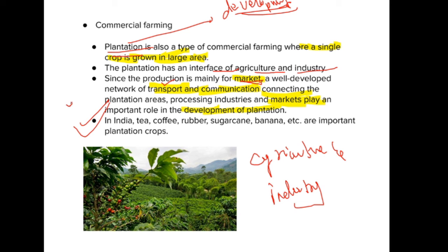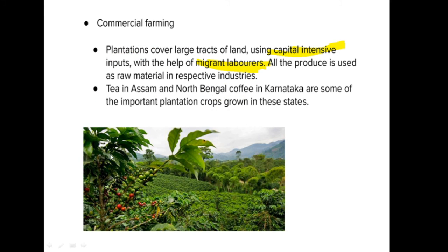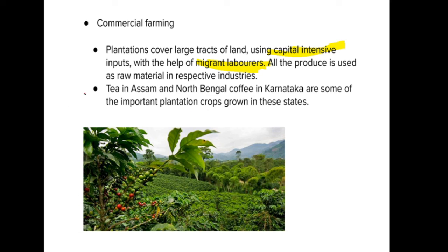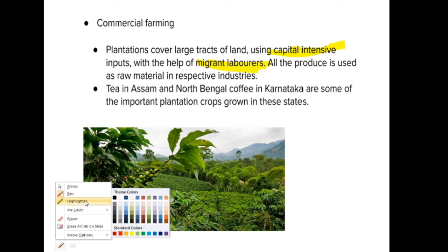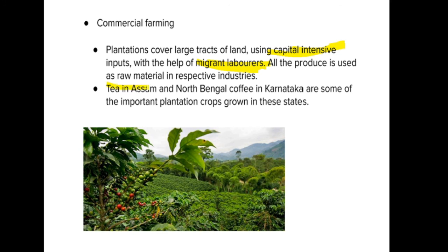Examples of important plantation crops include tea, coffee, rubber, sugarcane, and banana. Tea is an important plantation crop in Assam and North Bengal, while coffee is very important in Karnataka. These are some of the key plantation crops grown in these states.